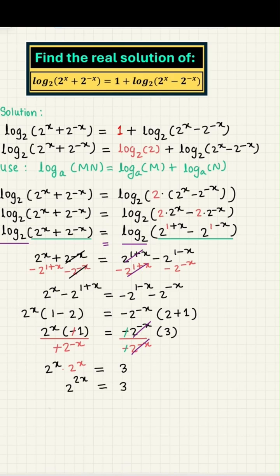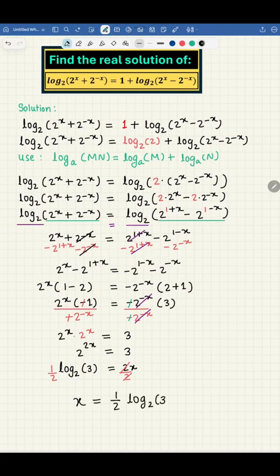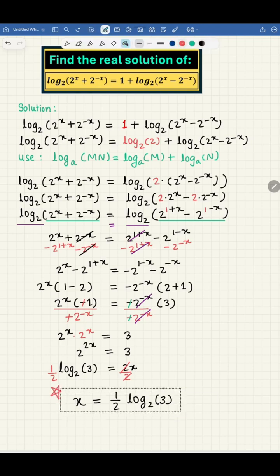Now, x is sitting up in the power of 2. How do we bring it down? Well, we write the equation 2 to the power 2x equal to 3 in the form of logarithm. That is, log to the base 2 of 3 equals 2x. Now, divide both sides by 2 and that gives us the value of x equal to 1 half times log to the base 2 of 3.